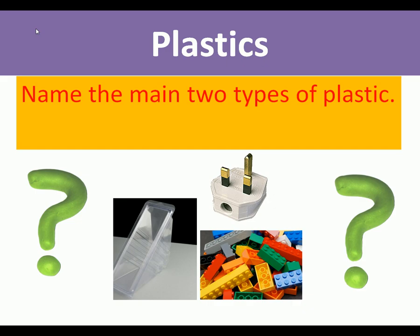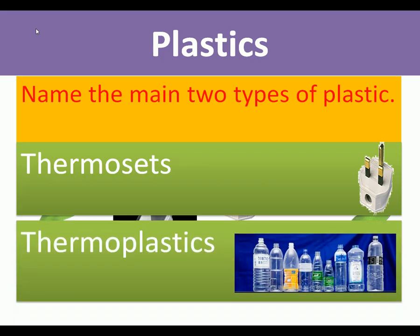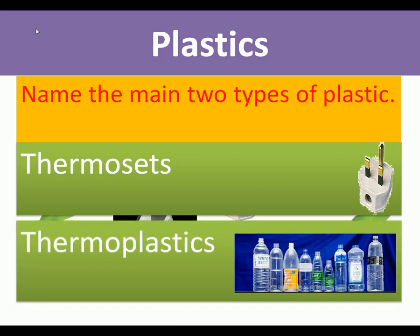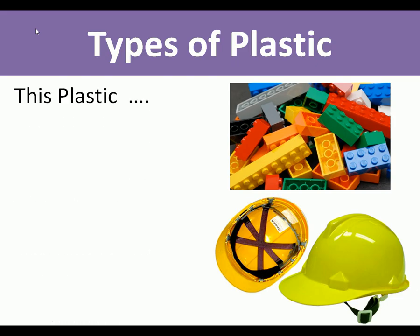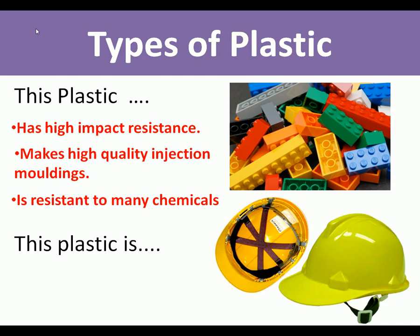Question time. Name the two main types of plastic — they are of course thermoplastics and thermosets. This plastic has high impact resistance, makes high quality injection mouldings, and is resistant to many chemicals — this plastic is ABS.